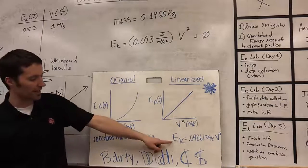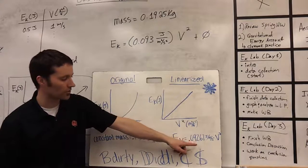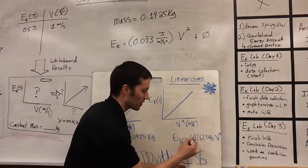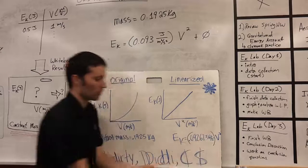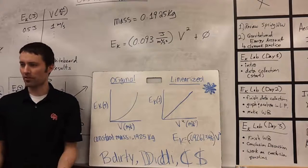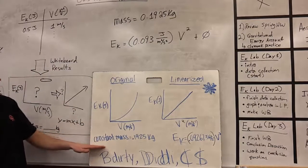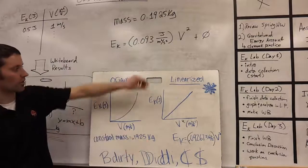And so they got the equation kinetic energy is equal to 0.0926 joules divided by meters squared over seconds squared. That's the slope, all times velocity squared. And their mass that they used in the experiment for the car was 0.1925 kilograms.